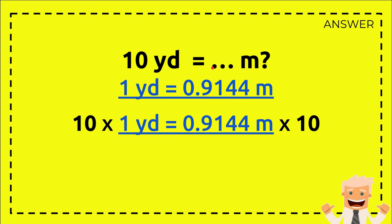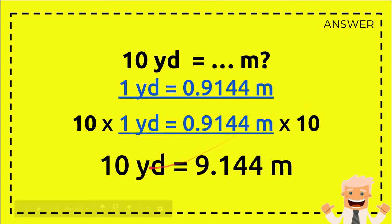Now we have the formula, then we need to multiply 10 with this value, and on the right side of the equal sign as well, we need to multiply 10 with this value. Now this is the answer: 10 yards equals 9.144 meters. That's all, thank you for watching.